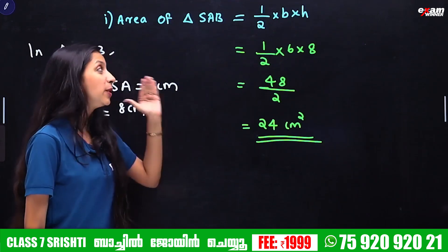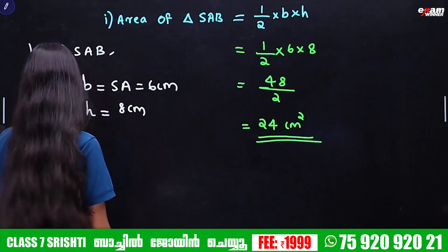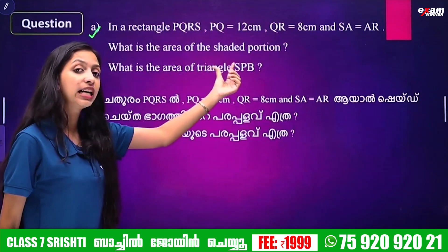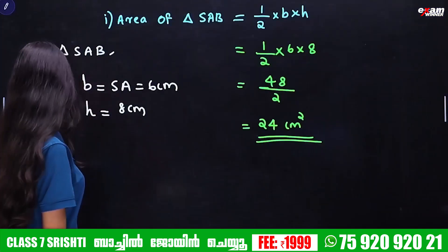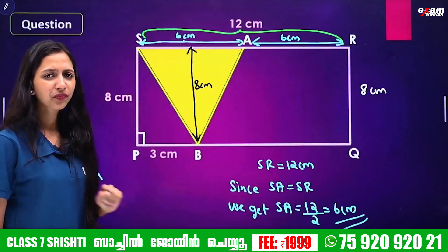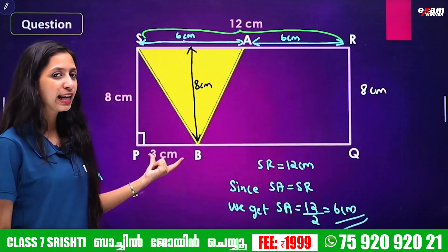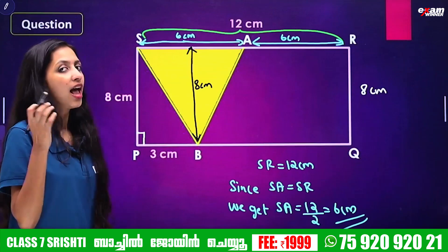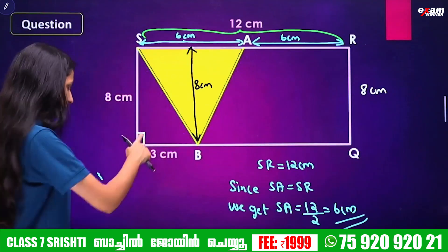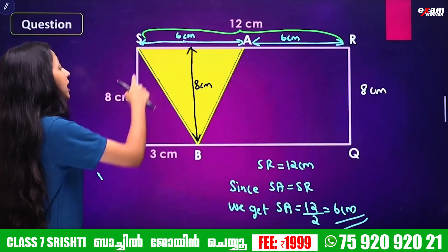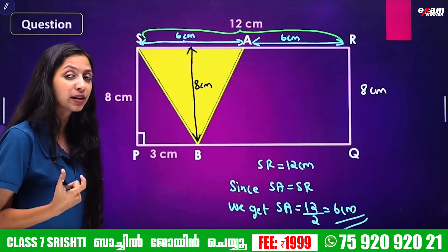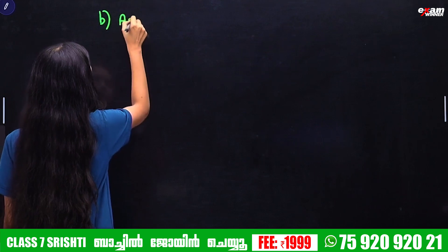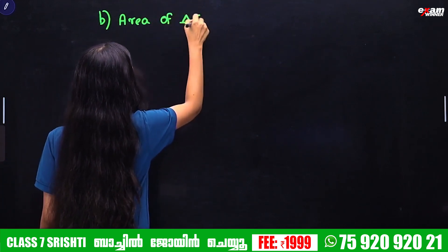So the area of triangle SAB is 24 cm². Now, what is the area of triangle SPB? In triangle SPB, we identify the base and height.